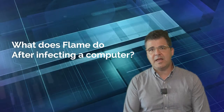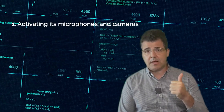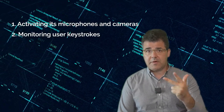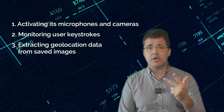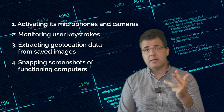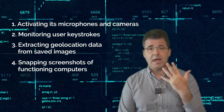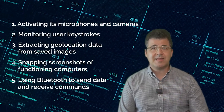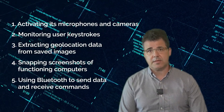So, what does Flame do after infecting a computer? Once it infects a computer, Flame carries out five primary activities: activating its microphones and cameras, monitoring user keystrokes, extracting geolocation data from saved images, snapping screenshots of functioning computers, and using Bluetooth to send data and receive commands.